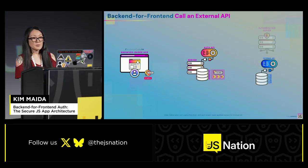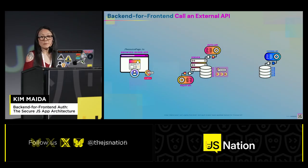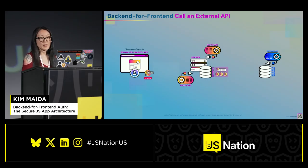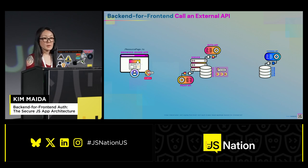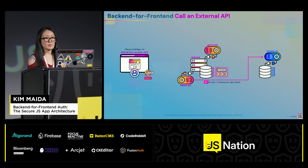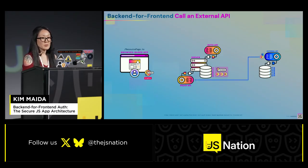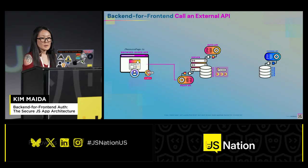Apps often need to get data from external resource APIs that need authorization. In this case, the back-end for front-end proxies external API requests since the front-end doesn't have an access token and can't authorize requests by itself. The front-end calls the back-end proxy API with the session ID cookie. The back-end looks up the session, and the proxy API forwards the request to the resource API with the access token in the header. The resource server validates the token, returns data, and the proxy API forwards that data to the front-end application.